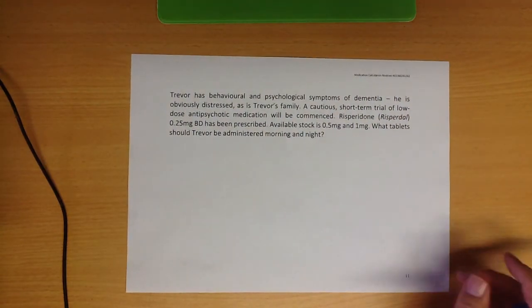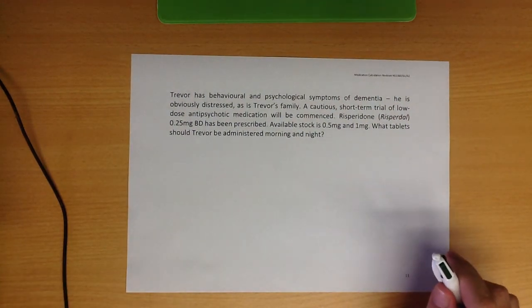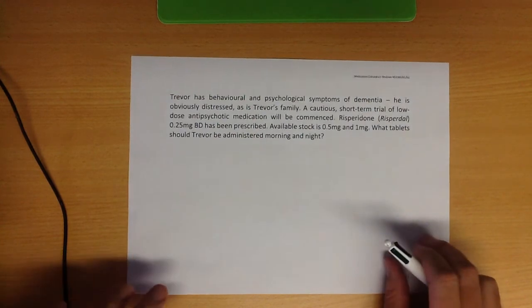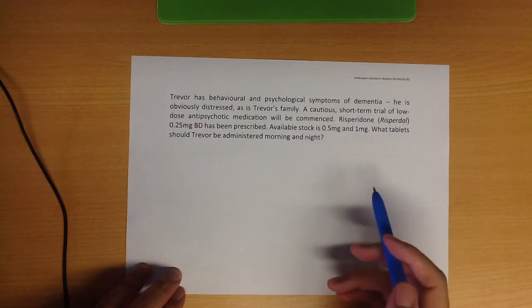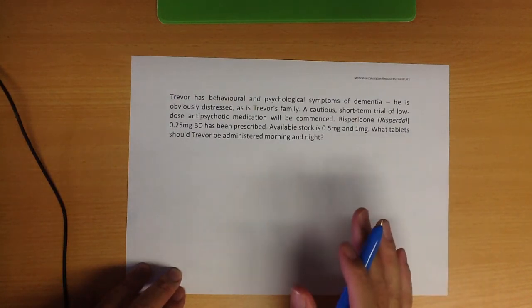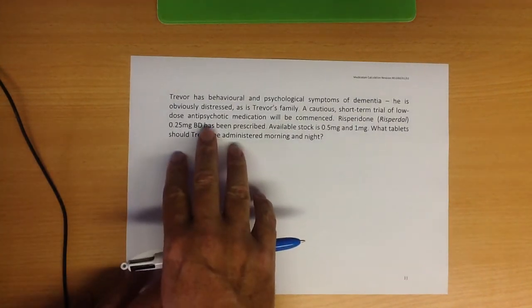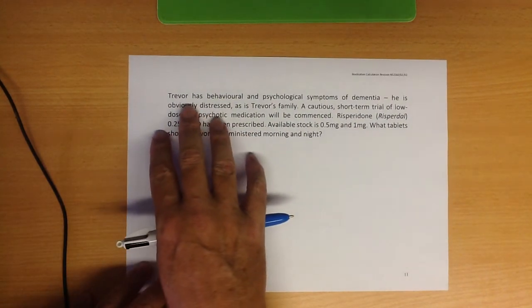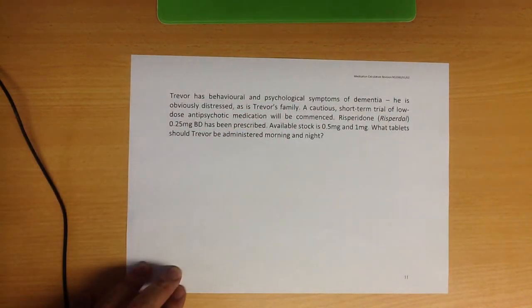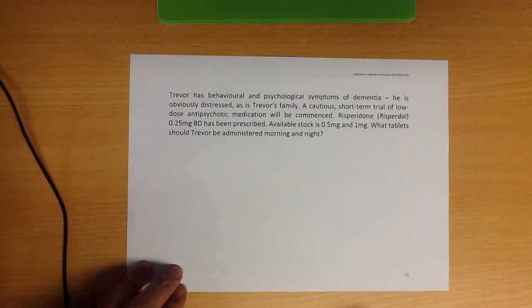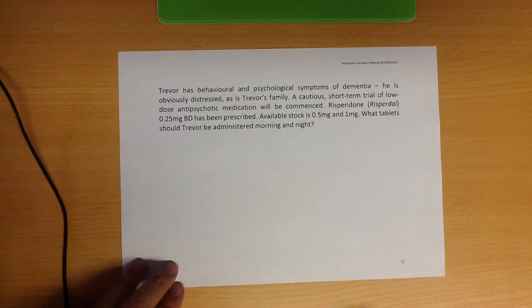And then this is the last one. A few people just tripped up on this one, I think got thrown out by the decimals a bit. So let's try to make it really easy. Just read the question, don't get distracted by all the stuff that's not directly related to the calculation. Trevor has behavioral and psychological symptoms of dementia. He's obviously distressed as is Trevor's family. A cautious short-term trial of low dose antipsychotic medication will be commenced. And this is pretty much the way it works. You don't want to go kill a mosquito with a sledgehammer. You want to be gentle, go low, go slow.